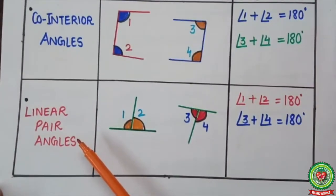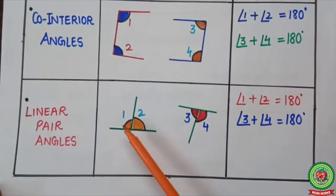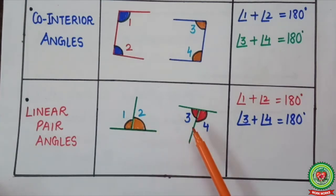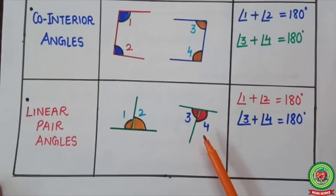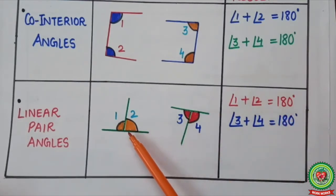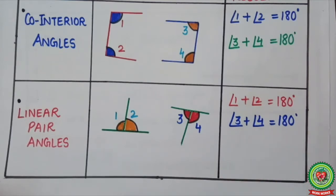Next are linear pair angles. Linear pair angles form when there are two adjacent angles on a straight line, or when a T shape is there. Angle one and angle two are linear pair angles. Similarly, angle three and angle four are linear pair angles. The sum of linear pair angles equals 180 degrees. So angle one plus angle two equals 180 degrees, and angle three plus angle four equals 180 degrees.